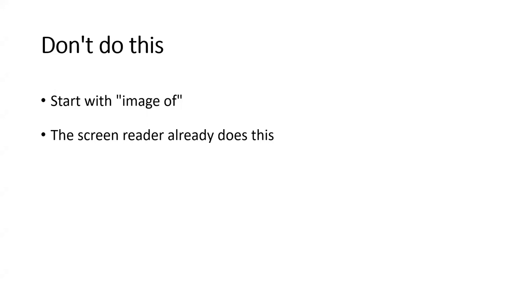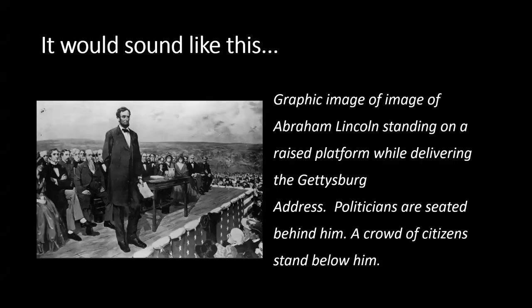One of the things you've got to remember not to do is start with 'image of.' A screen reader already does this for the learner. Going back to our friend Abraham Lincoln — if I put in 'picture of,' it sounds like 'graphic, image of, image of,' because as the screen reader gets to that point it tells the learner we are now on an image. So it's redundant. You do not need to put that in when you're creating alternative text for images.